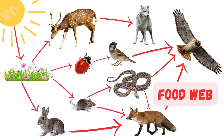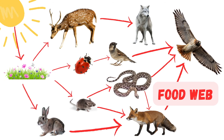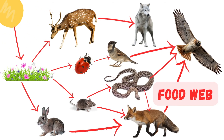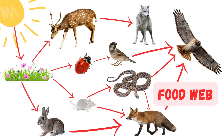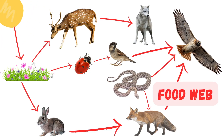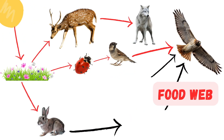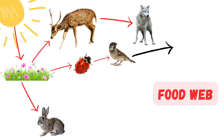As you can see, the food web creates a complex, interconnected system where every plant and animal plays a part. It's a delicate balance. If one species is removed, it can affect the entire ecosystem. Understanding these connections helps us see how important each organism is, from the tiniest insect to the largest predator.